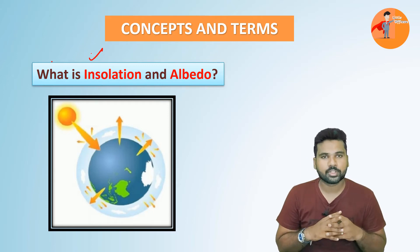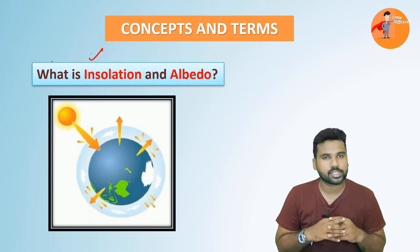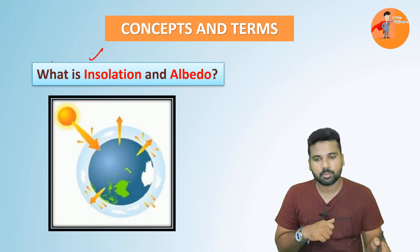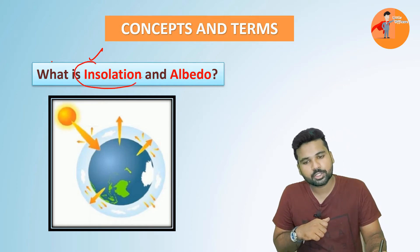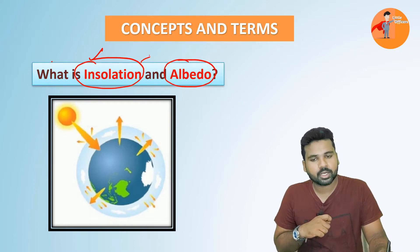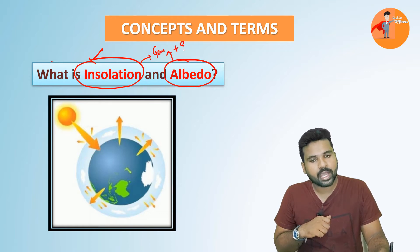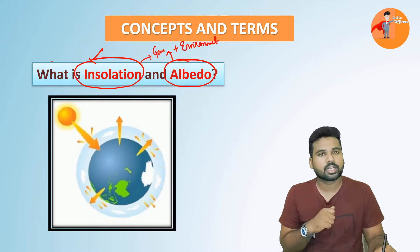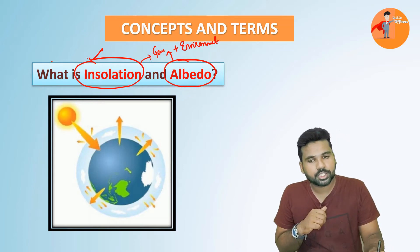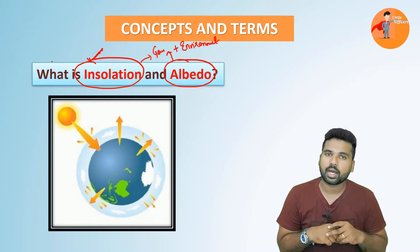Hello guys, welcome to Little Officers. Welcome to the series on concepts and terminology for UPSC and state PCS examinations. In this particular video, let us go and understand the meaning of insolation and albedo, which are often asked by UPSC. Both of them are related to geography, and albedo is a topic from geography as well as from environment.